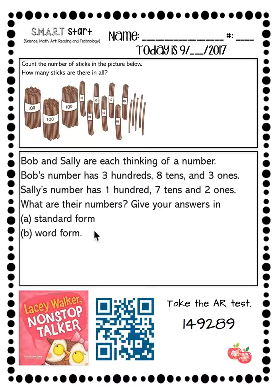So you're going to write two numbers — you're going to have Bob's number and Sally's number — and please write that in standard form and then in word form. Once you're finished with these two math problems, go ahead and listen to a reading of Lacey Walker, Nonstop Talker. Then you can take the AR test on that.